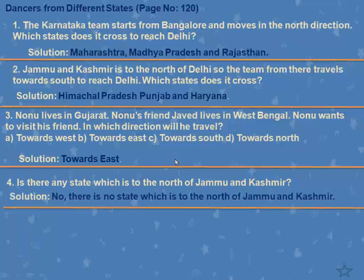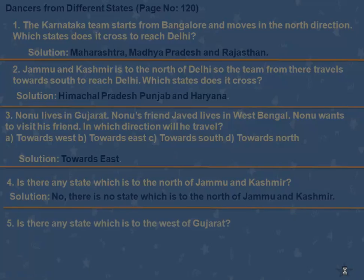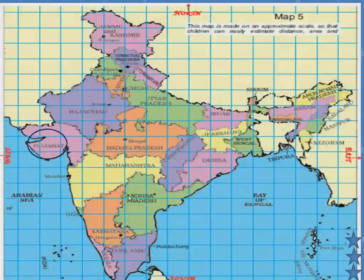So the answer is: No, there is no state which is to the north of Jammu and Kashmir. Fifth question: Is there any state which is to the west of Gujarat? This is Gujarat and the west direction is this side. Can you see any Indian state here? No. So the answer is: No, there is no state to the west of Gujarat.